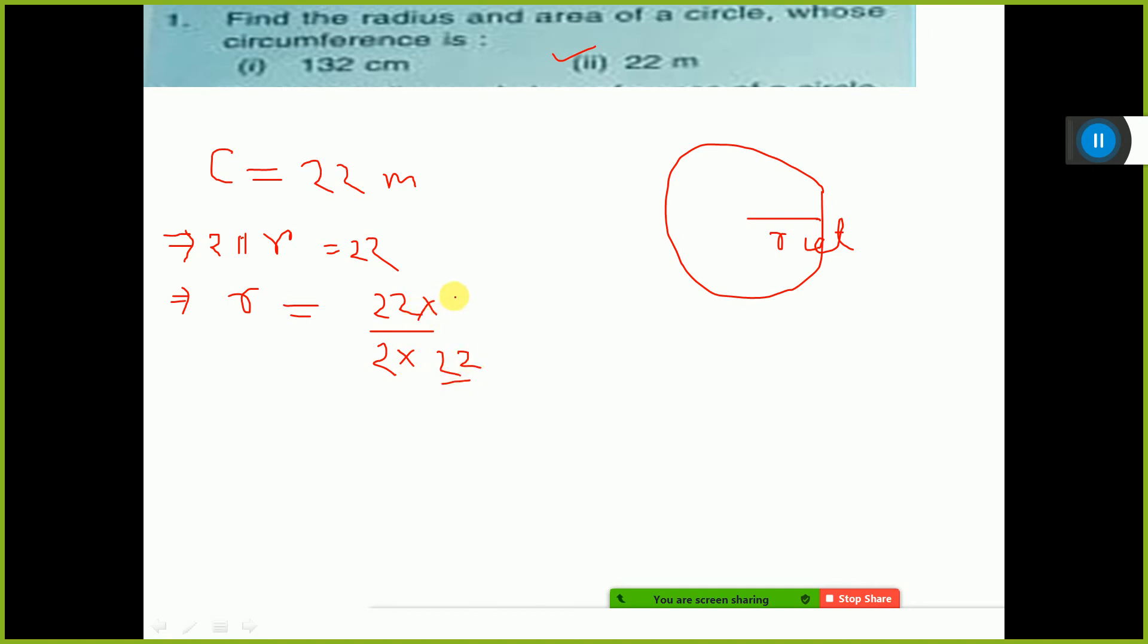Here I am writing. Then this 22 to 22 cancel. Then 7 by 2 means 3.5 meters. This is the answer, one answer.